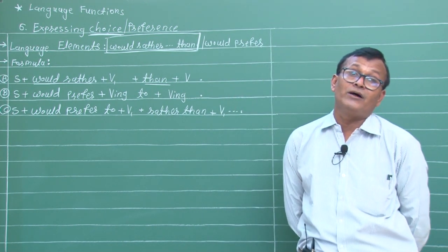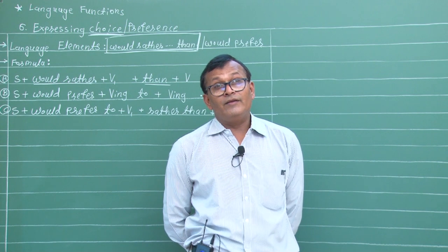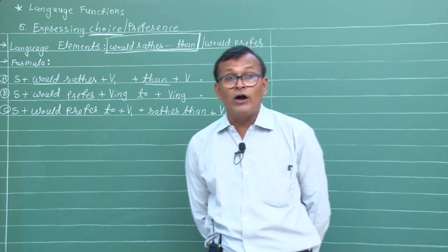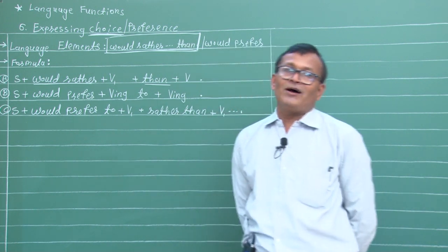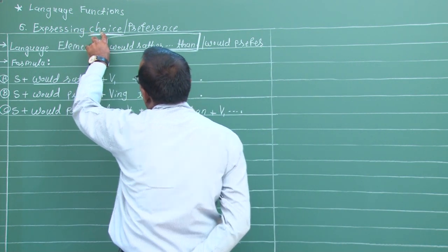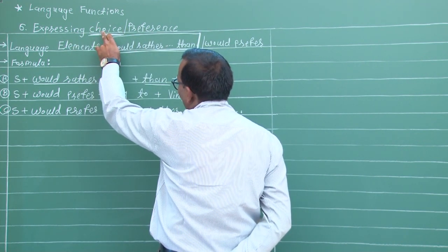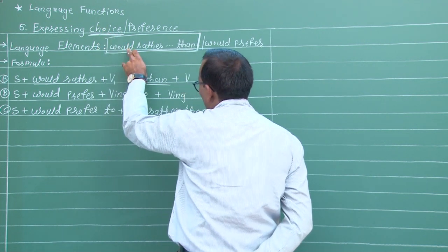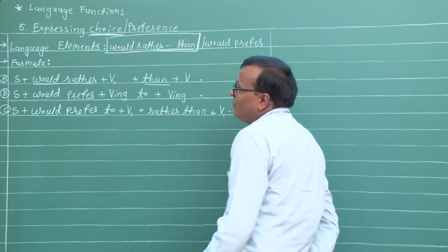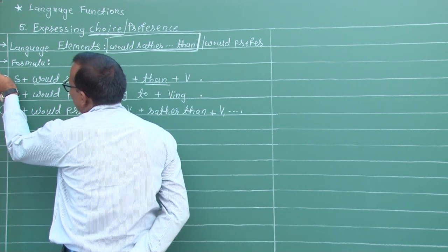ઉદાહરણ: 'I would rather run than walk' - ચાલવાને બદલે દોડવું, હું વધારે પસંદ કરું છું. જ્યારે પસંદગી કરવાની હોય ત્યારે આ language function વપરાય છે. Expressing Preference, Choice - જેની અંદર 'would rather than' language element આવે. 'Would prefer' પણ આવે, પણ સૌથી વધારે મહત્વની - mostly IMP - mostly પૂછવામાં આવે.